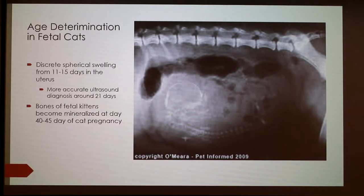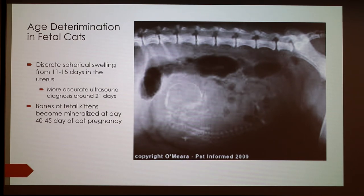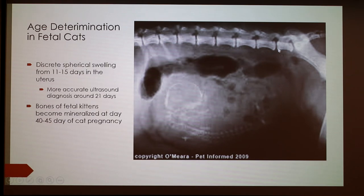Age determination in fetal cats — I found this information pretty useful. You'll normally see a change in the uterus at days 11 to 15. A more accurate ultrasound can be used at day 21. The image to the right is an X-ray. X-rays are really good at showing bone — here's the mother's spinal column right through here. The bones of fetal kittens become mineralized at day 40 to 45. You can see these little faint marks here that look like dashes — those are the spinal columns of the fetuses.